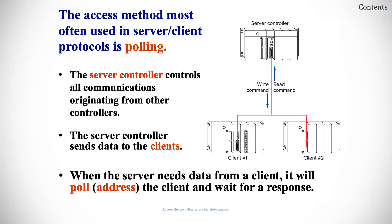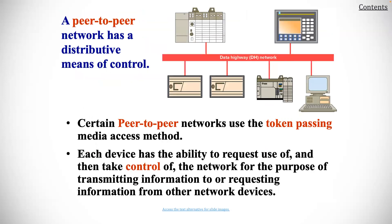The access method most often used in server-client protocol is polling. The server controller controls all communication originating from the controls. The server sends data to the clients. When the server needs data from a client, it will poll the clients and wait for a response.